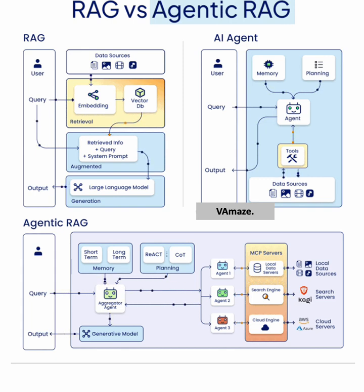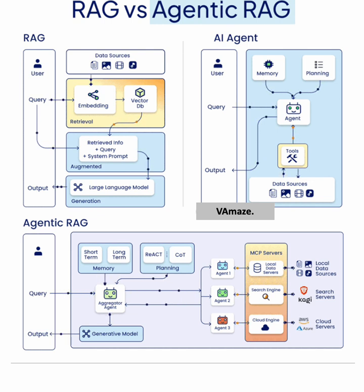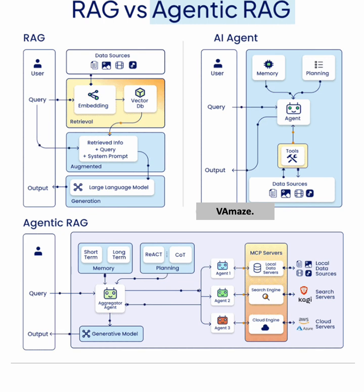Next, we move to AI agents, which add a layer of intelligence beyond simple retrieval. The AI agent starts with the user's query and then accesses memory and planning capabilities. It performs more complex tasks by not only retrieving information from external data sources, but also using its memory to make decisions and plan the next steps. This makes AI agents capable of more dynamic interactions and responses based on evolving contexts.